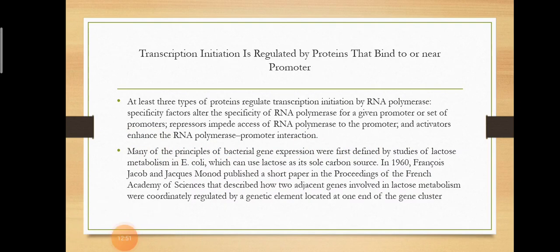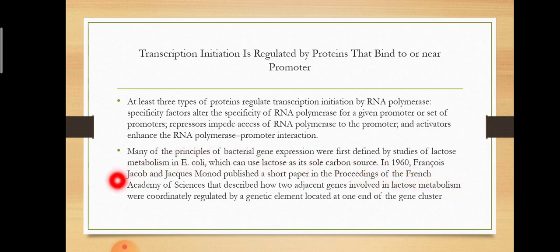Many of the principles of bacterial gene expression were first defined by studies of lactose metabolism in E. coli. In 1960, François Jacob and Jacques Monod published a paper in the proceedings of the French Academy of Science that described how two adjacent genes involved in lactose metabolism were coordinately regulated by a genetic element located at one end of the gene cluster.